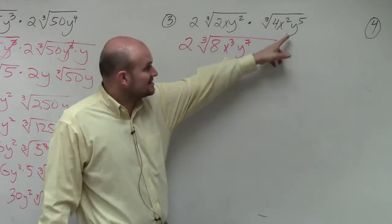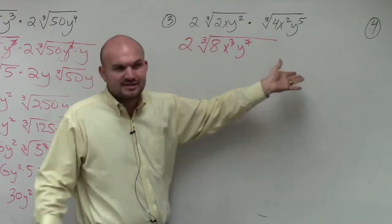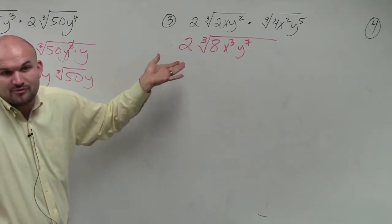In this case, there's nothing I could simplify except for that y to the fifth. So I just said, you know what? Let's just multiply them. There's no simplifying I can do before.